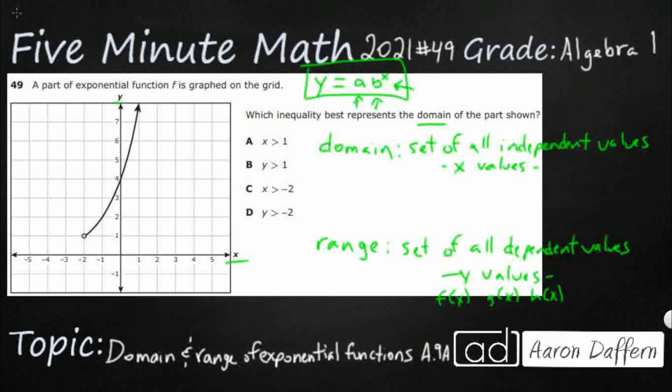And so we're looking for our domain. So let's take a look at our X values. Our domain, we're just looking left to right on our X axis. And take a look right here. We've got an open circle. So that means something.